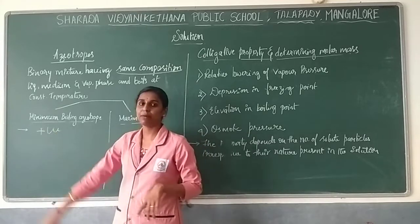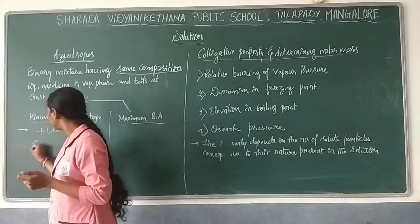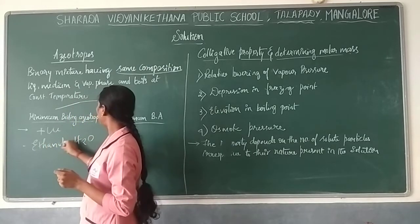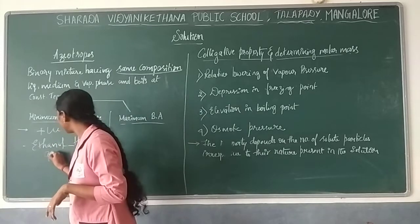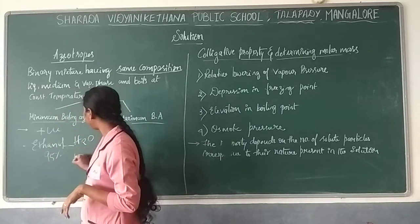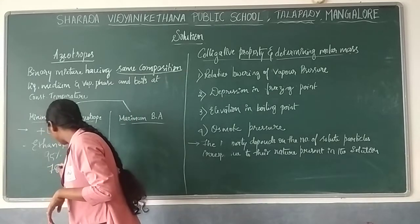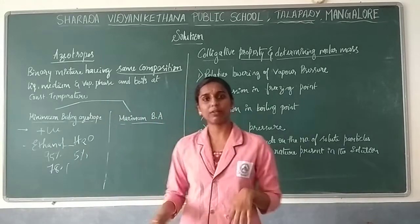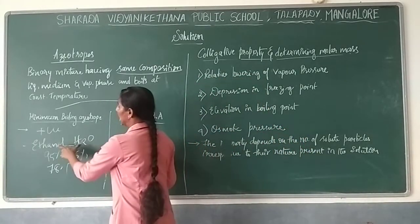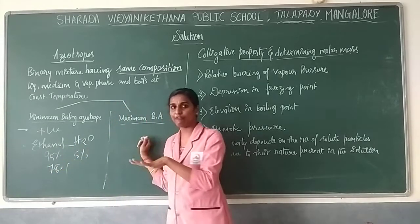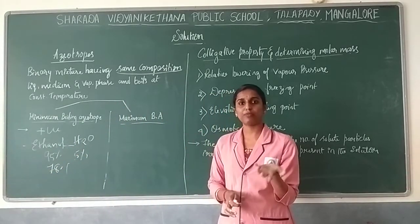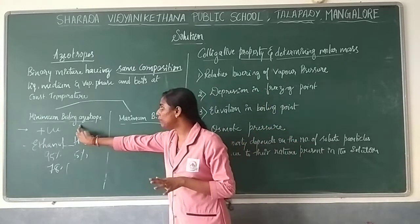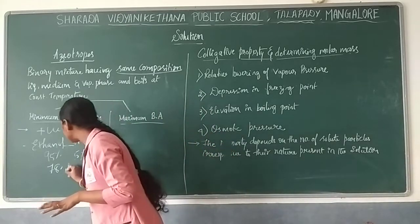An example of a minimum boiling azeotrope is ethanol and water. Taking approximately 95% ethanol and 5% water, this mixture boils at 78.5°C. The composition in the liquid phase and the vapor phase remains the same, and both components boil at the same temperature.